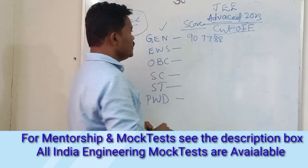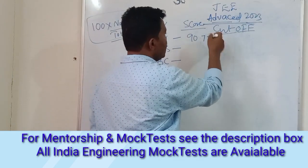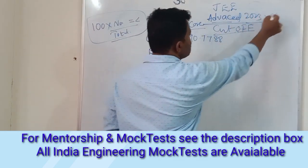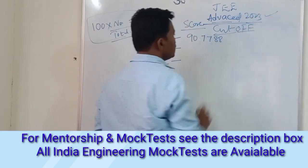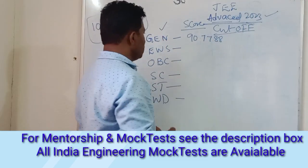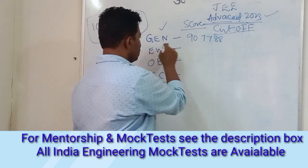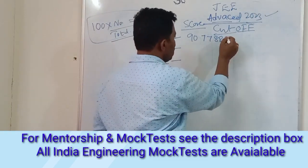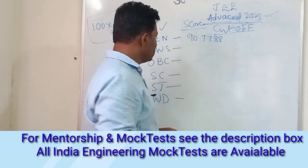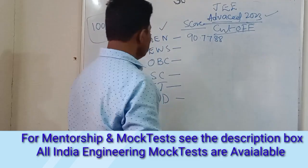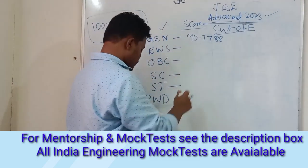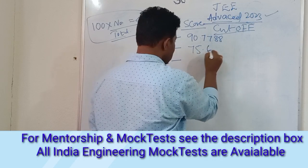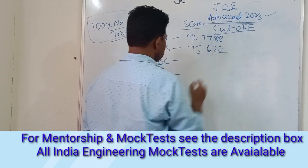Based on this formula, the NTA score from Paper 1 of Session 1 and Session 2 — the best score is considered — and they will be qualified for JEE Advanced. As per that, the cutoff for General category is 90.778 and EWS is 75.622.